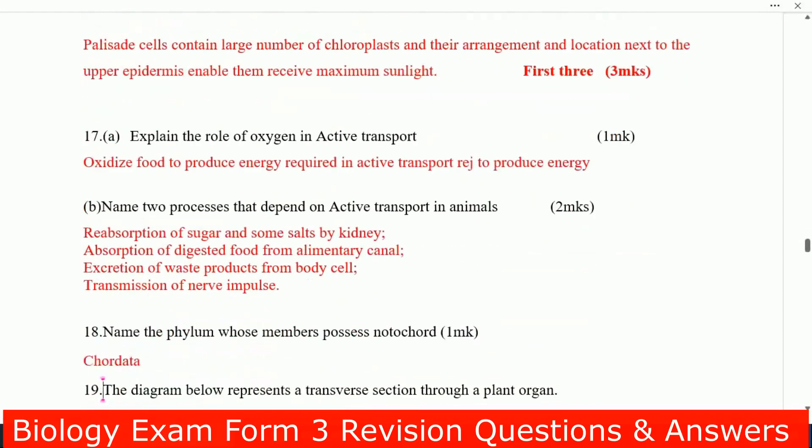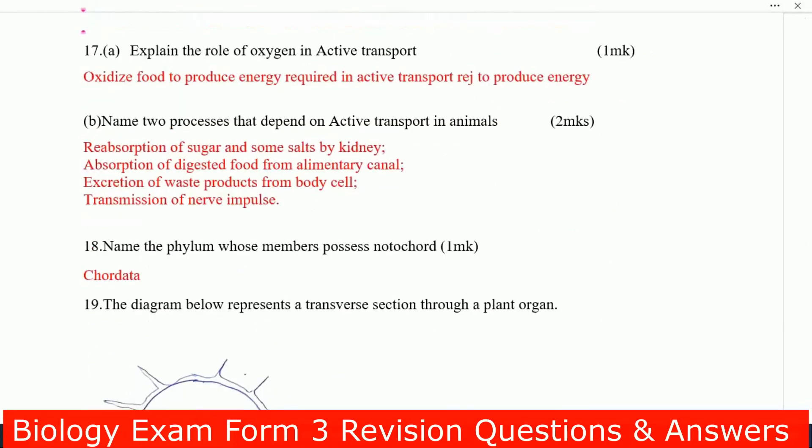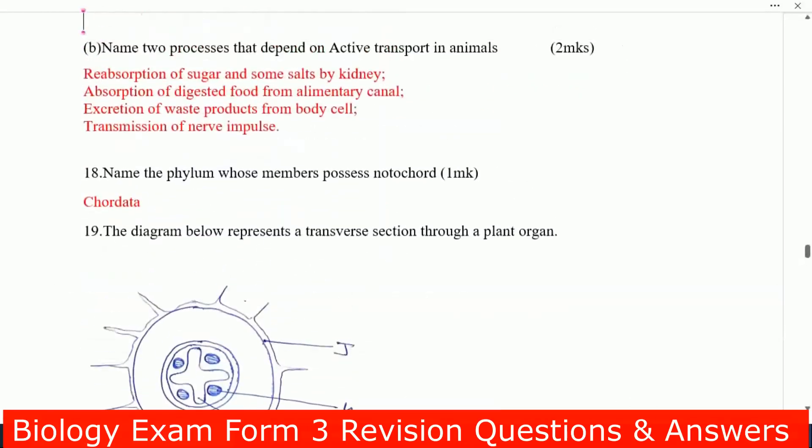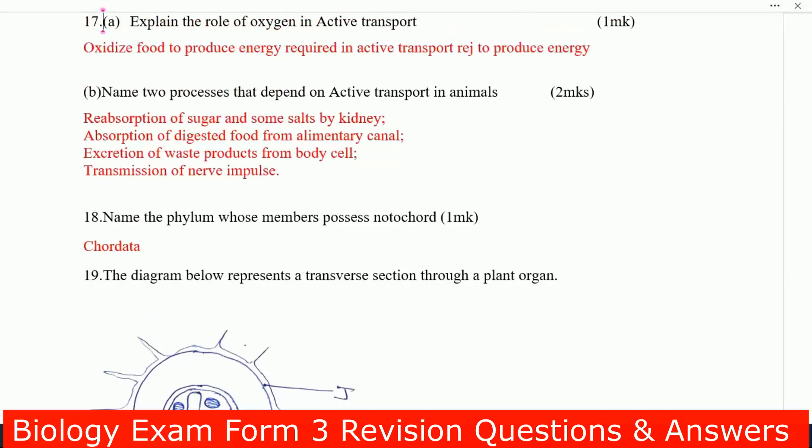Number 17, explain the role of oxygen in active transport. What is the role of oxygen in active transport? Oxidize food to produce energy required in active transport. Next, you are told name two processes that depend on active transport in animals.